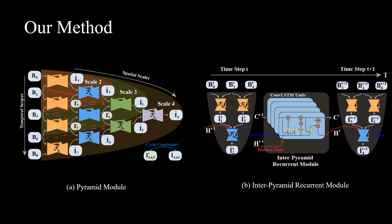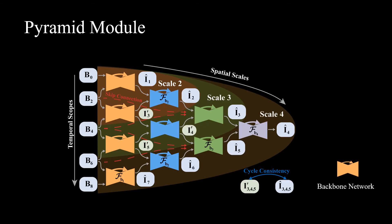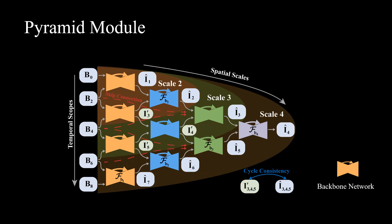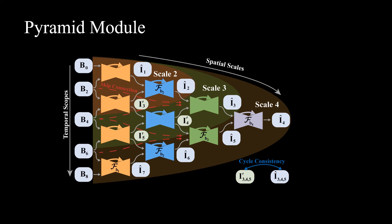The proposed blurry video interpolation model includes the pyramid module and the inter-pyramid recurrent module. The pyramid module consists of multiple backbone networks. The backbone networks in the same color have shared weights. It takes two consecutive frames as inputs and synthesizes one intermediate frame. The pyramid module can reduce motion blur and produce intermediate frames simultaneously. We show three scales — scale 2, scale 3, and scale 4. A module with larger scales takes more frames as inputs and has wider receptive fields. We use skip connections to propagate the feature information to later networks.